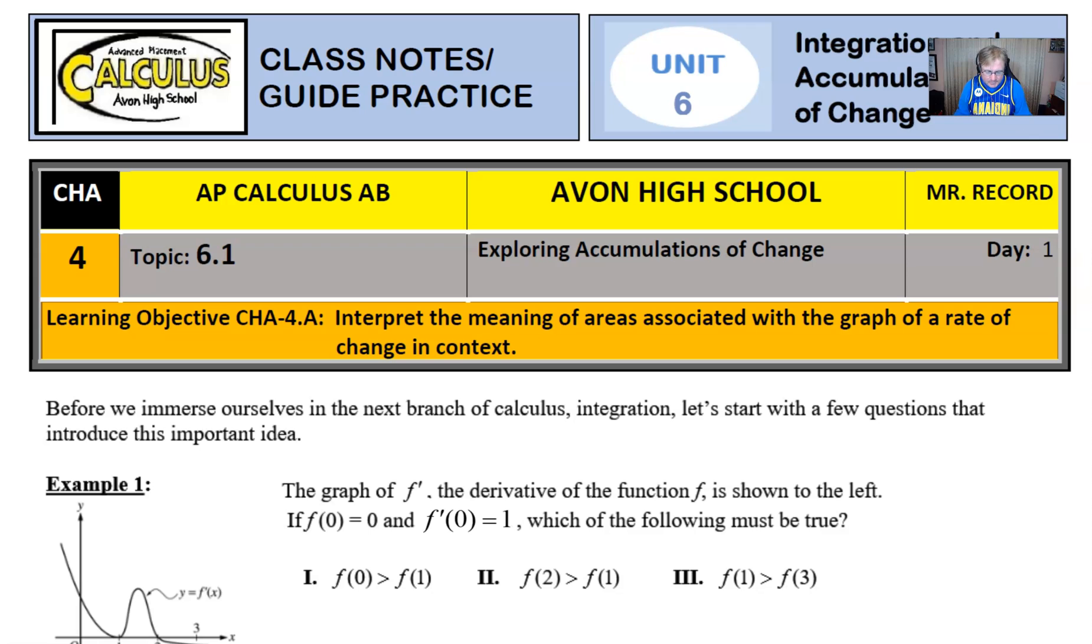There's our banner. Anytime we begin a new unit, we have our banner there. Unit 6, Integration and Accumulation of Change is the title, and as I said before, in Topic 6.1, we're going to explore accumulations of change. And basically, our objective is to interpret the meaning of areas associated with the graph of a rate of change in context. That's what we're going to be slowly kind of leading you towards here.